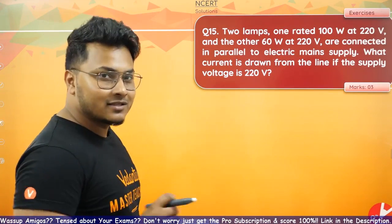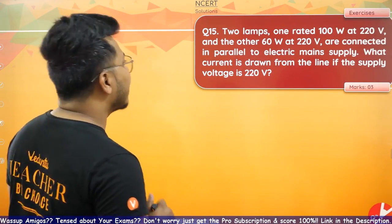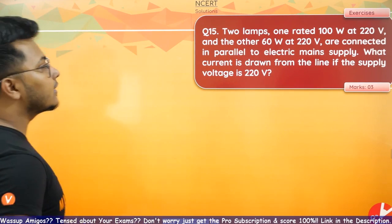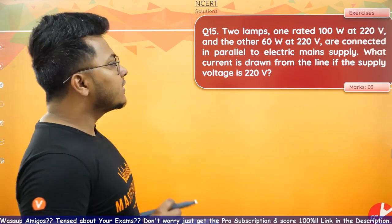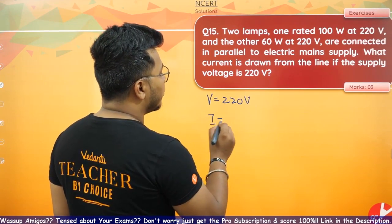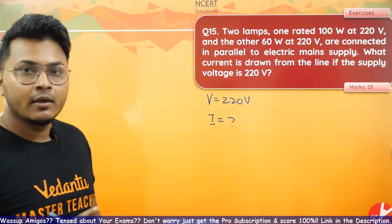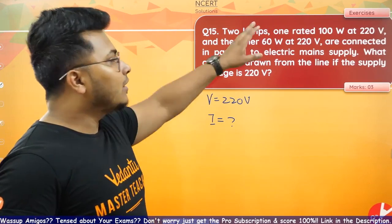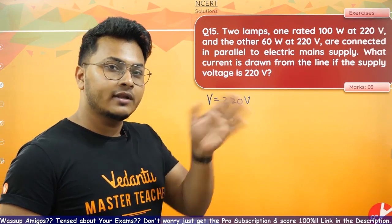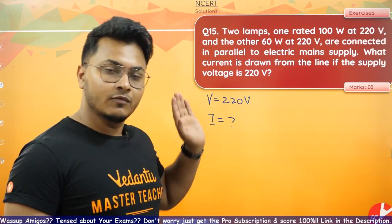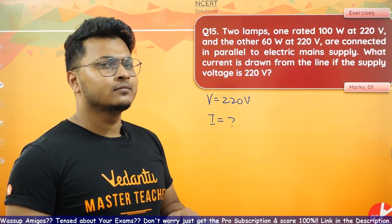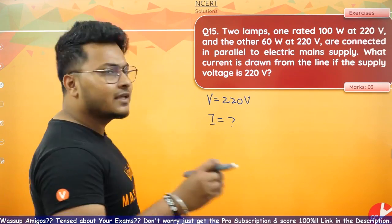A very interesting question from the exercise. Two lamps — one rated 100 watts at 220 volts, and the other 60 watts at 220 volts — are connected in parallel to the electrical mains supply. What current is drawn from the line if the supply voltage is 220 volts? There are two methods: find individual resistances, combine them as parallel resistance using 1/R = 1/R1 + 1/R2, then apply Ohm's law. But there is a smarter and shorter method.